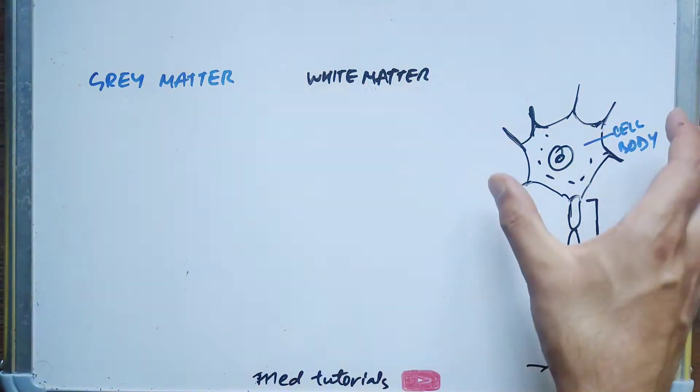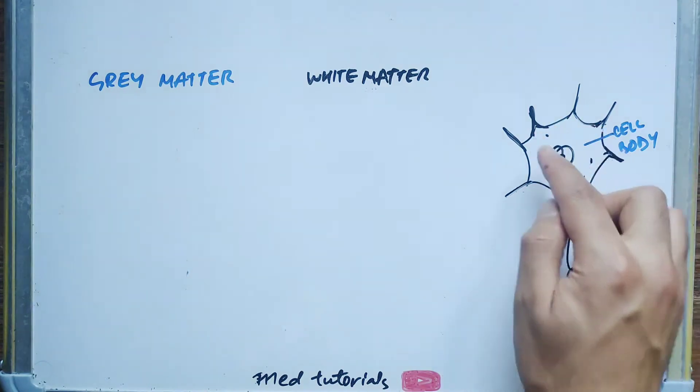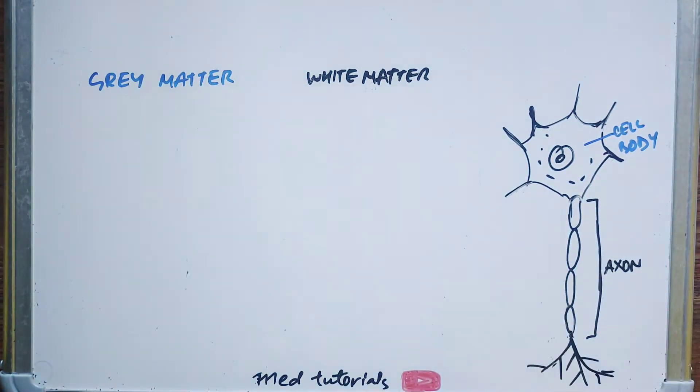Sab se pehle yaa par hum dekh sakte that this is a typical neuron and this is the cell body of a neuron and this is the axon.